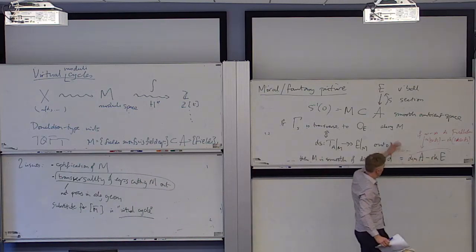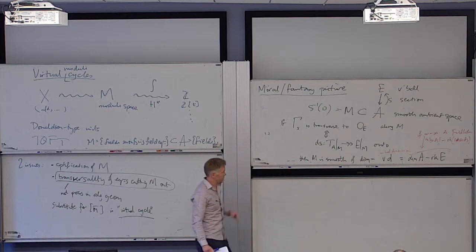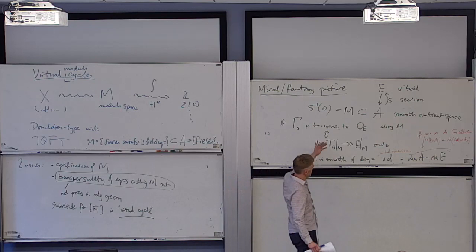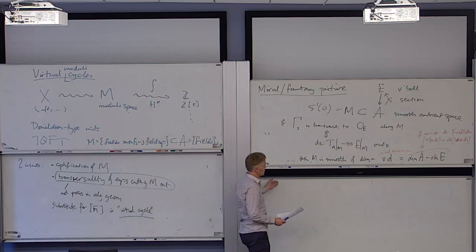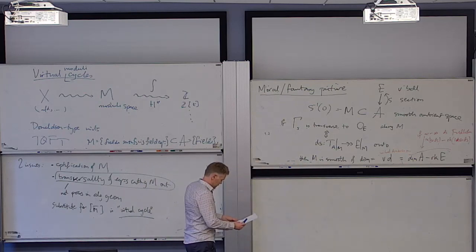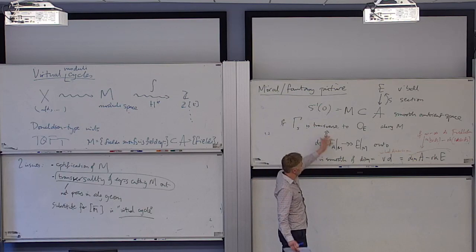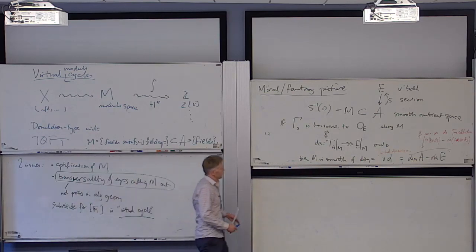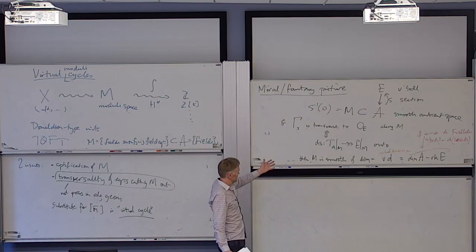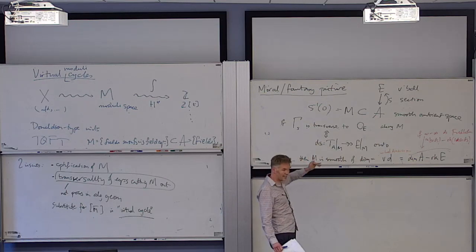The virtual dimension is the dimension that M should be — the dimension M is when the equations are transverse. There's a Sard's theorem which says: if you perturb the section — like the Bertini theorem — for a generic perturbation, a dense set of perturbations, you can perturb it a tiny little bit and your moduli space will have the correct dimension. Within algebraic geometry, however, we can't perturb if we want to keep within algebraic or holomorphic functions, so we have to do something else.